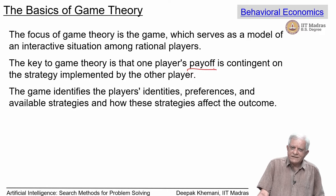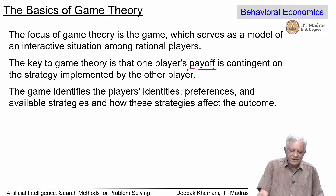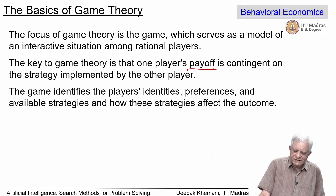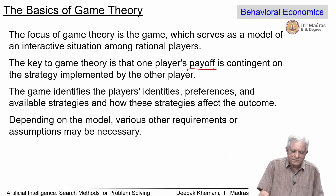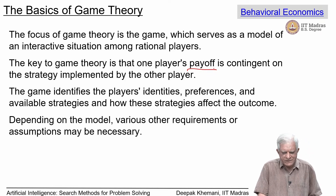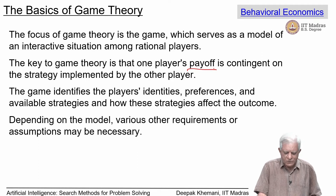The game identifies the players' identities, preferences, and available strategies, and how these strategies affect the outcome. When we model a situation as a game, we have to identify who are the players, what do they want (which is their preferences), what decisions or strategies are accessible to them, and what is the final outcome. Depending on the model, various other requirements or assumptions may be necessary. We will see various different kinds of games, and eventually we will focus down to simpler games like chess, which is what we want to learn how to program.